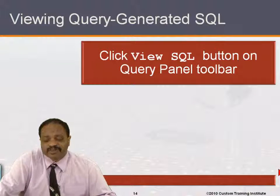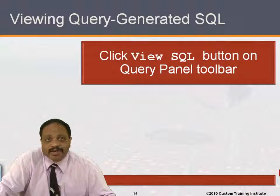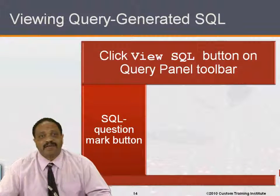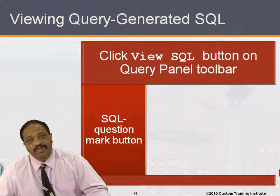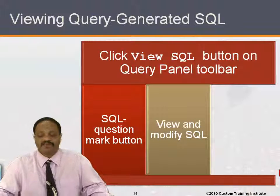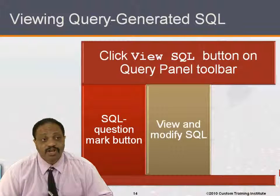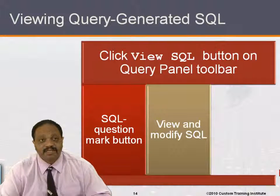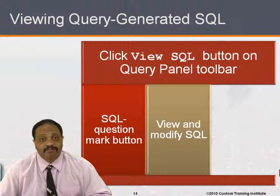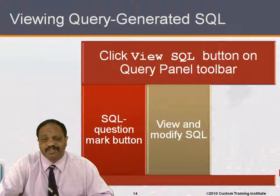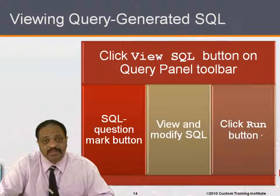There is a button on the query panel toolbar that shows 'SQL' — it's the View SQL button, an SQL question mark button. Clicking it allows you to see the actual SQL that is generated, because when we're doing all this drag-and-drop work, you might be interested in seeing what SQL Business Objects is actually passing back to the database. You might be curious about what it's doing, or you might want to modify and fine-tune it. Once you've clicked that button, you can view and optionally modify the SQL, then click Run.